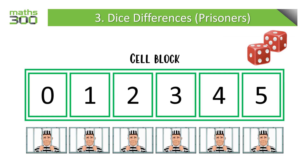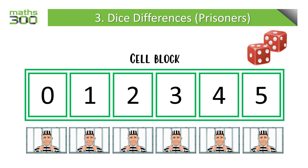Here we see an example of the game board. Students can use counters to simulate where the prisoners have been placed, and they can run the simulation. We recommend that teachers give students the opportunity to play through the game several times before they look at the underlying theory of the game, which has to do with the probability of rolling the various dice differences.